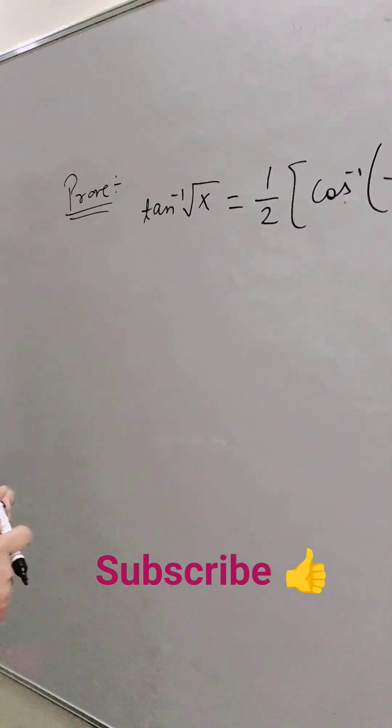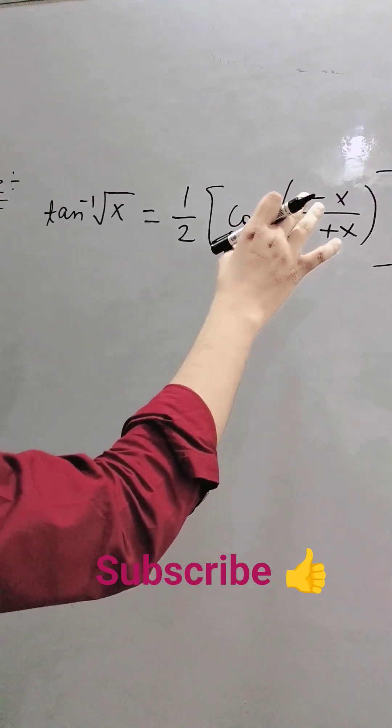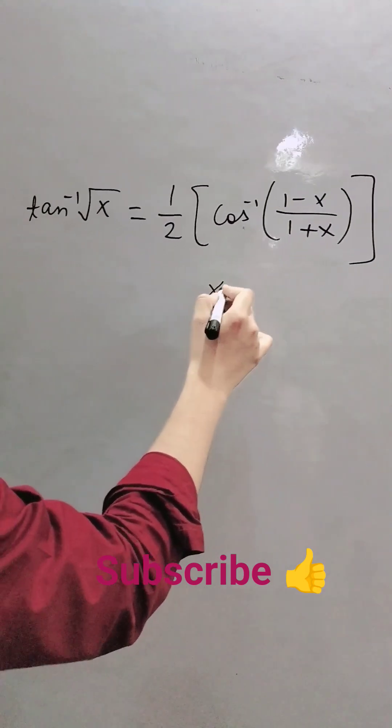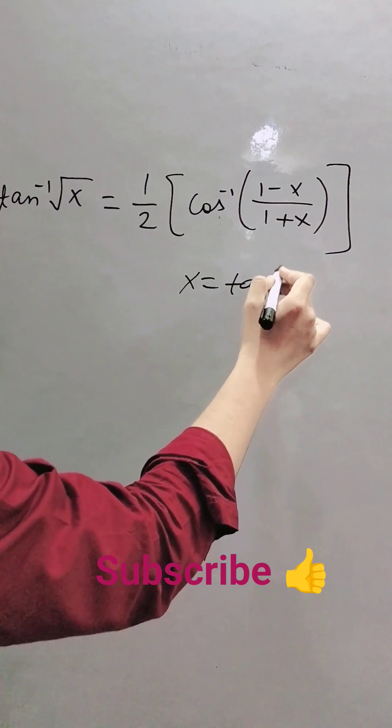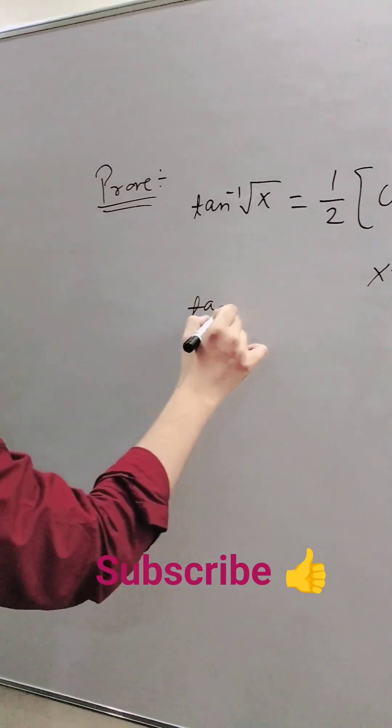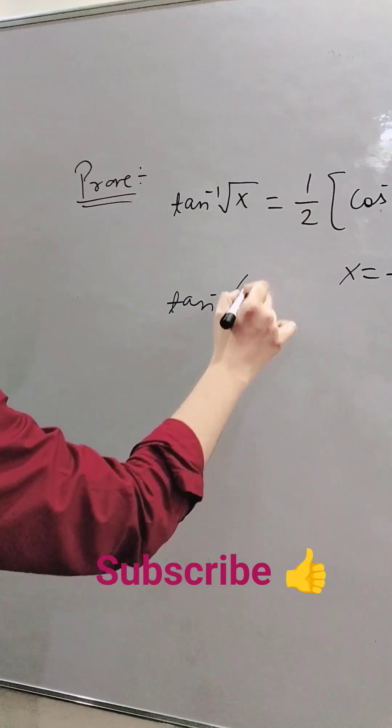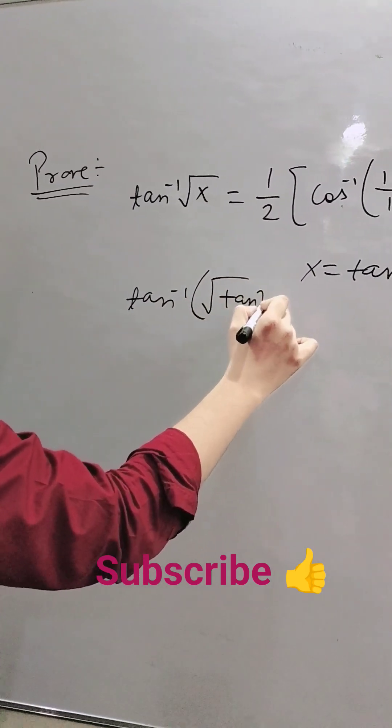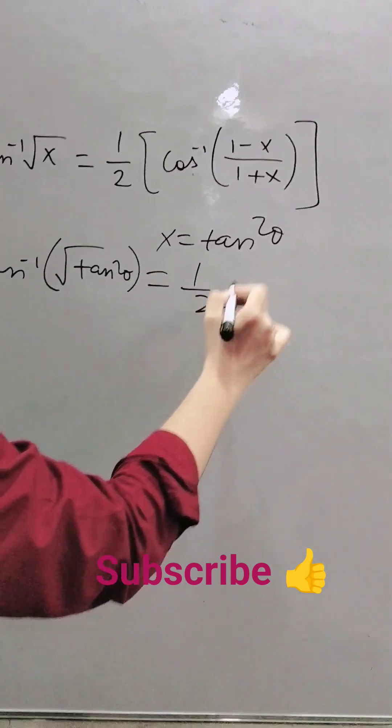Now if we have cos inverse and 1 minus x, we will take x = tan²θ. So on putting the values, we get tan⁻¹(√(tan²θ)) equals